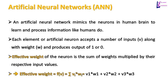If an artificial neuron is given three inputs v1, v2, and v3, then the function to represent the effective weight would be: f(v) = v1 × w1 + v2 × w2 + v3 × w3, where w represents the weights associated with the respective inputs.